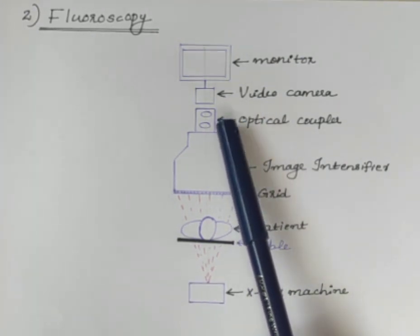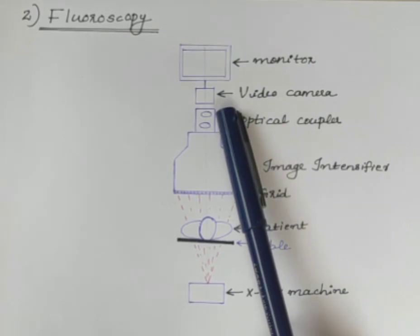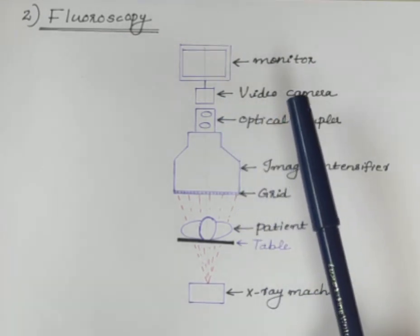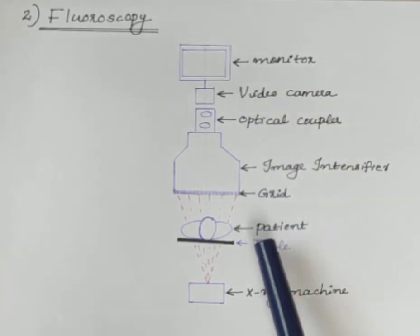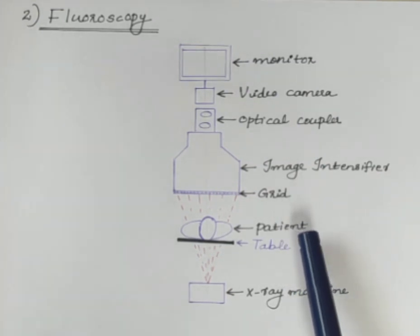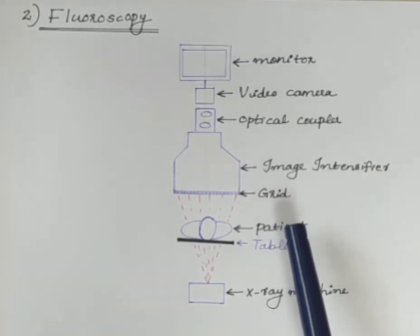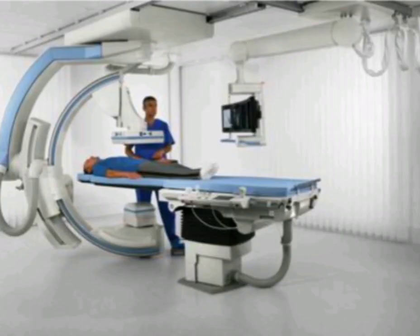The video signals from the video camera is amplified and transmitted to the monitor. So the main application of fluoroscopy is to get real-time and moving images of the internal structures and fluids. Thank you.